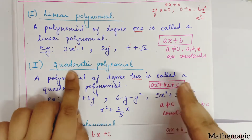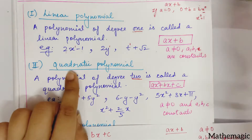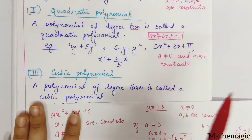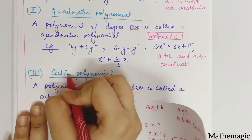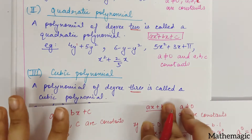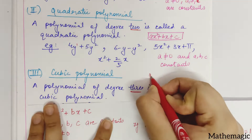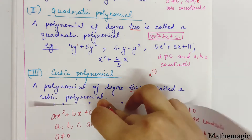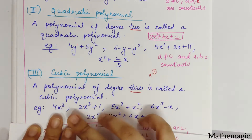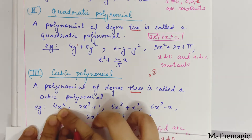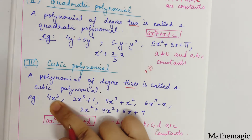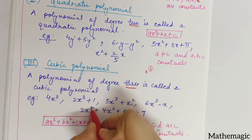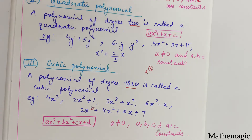Now we'll move on to the cubic polynomial. A polynomial of degree 3 is called a cubic polynomial — as you can guess from the word 'cubic', it relates to degree 3, like a cube. For example, 4x cubed — degree is 3, there is no other variable, so this is called a cubic polynomial. All examples with degree 3 are called cubic polynomials.